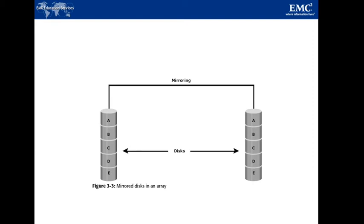Mirroring improves read performance because read requests can be serviced by both disks. However, write performance is slightly slower than on a single disk because each write request manifests as 2 writes on the disk drives. Therefore, mirroring does not deliver the same level of write performance as a striped setup.